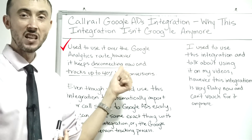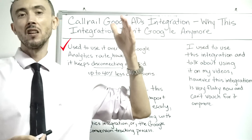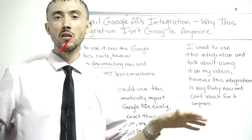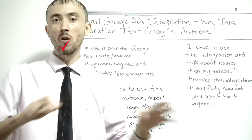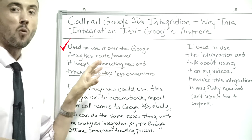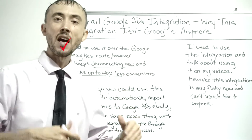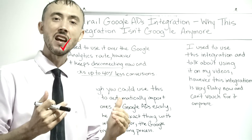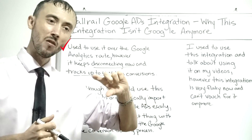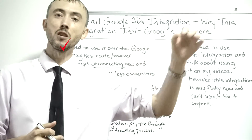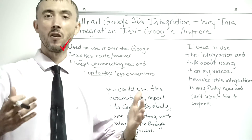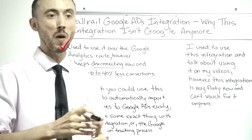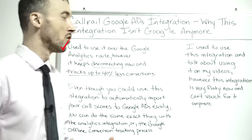Once I saw the undercounting, plus the intermittent disconnections in some of our accounts, I decided to completely stop using the CallRail to Google Ads integration. The undercounting is bad enough on its own — more data means more results, as I mentioned. But even worse than less data is intermittent data. One month the integration is working fine, the next it's undercounting by 30 to 40 percent. That really confuses the algorithm — it doesn't know what it thought it knew to get you customers anymore, so it goes back to relearning everything. You don't want that.